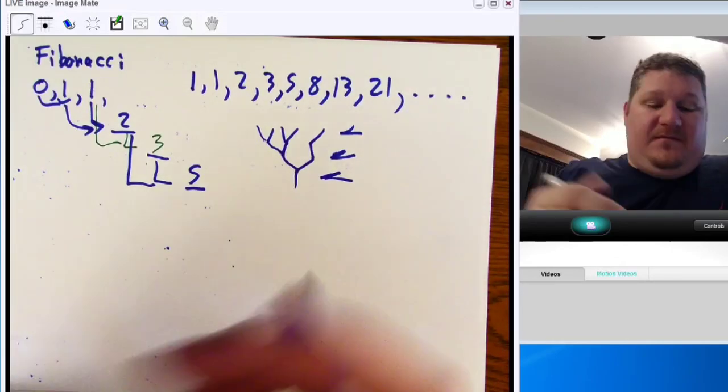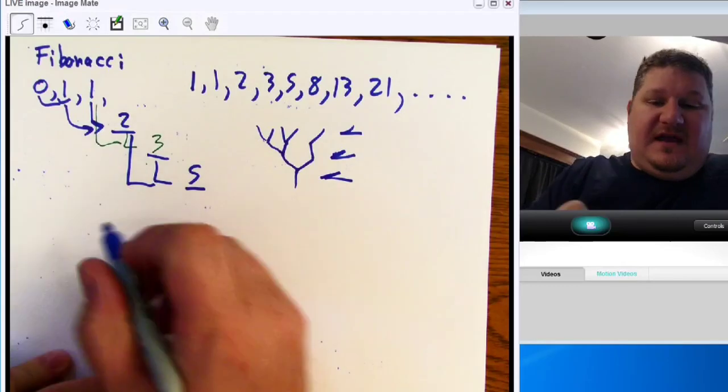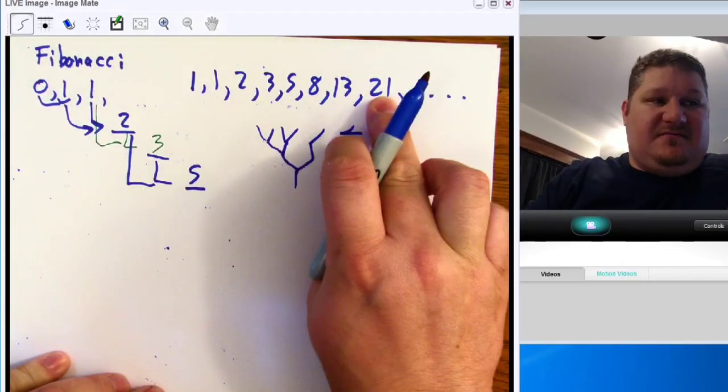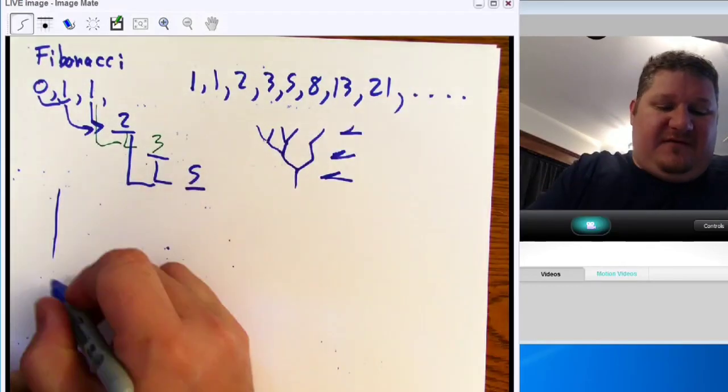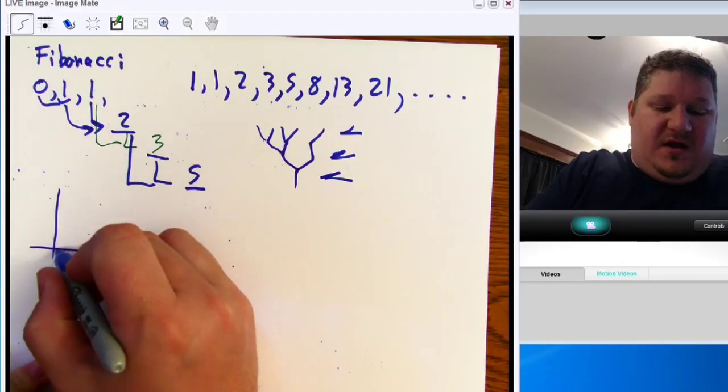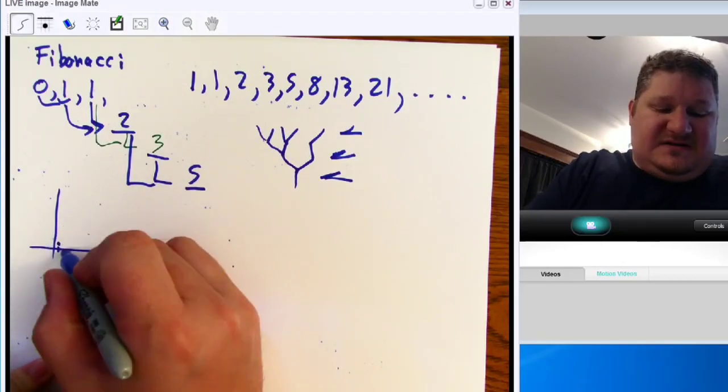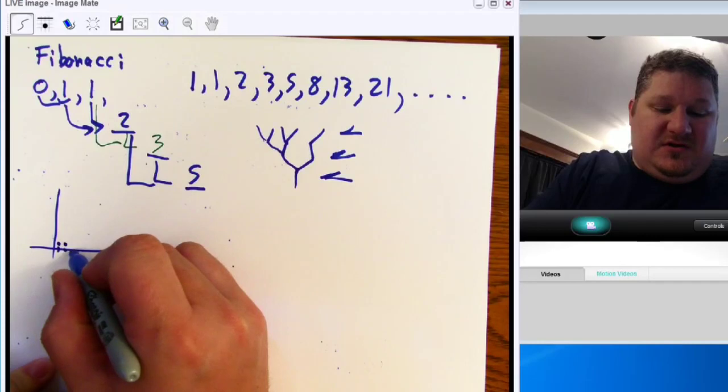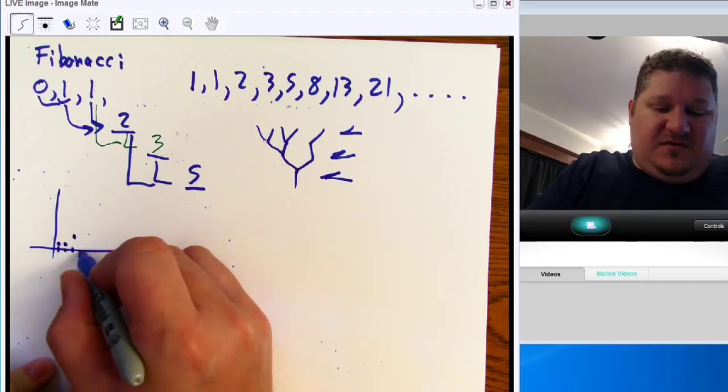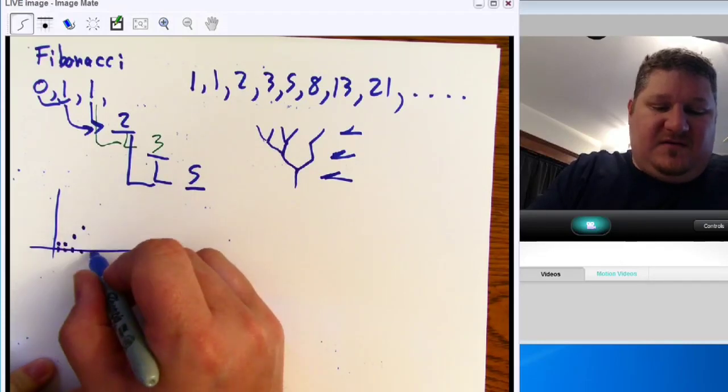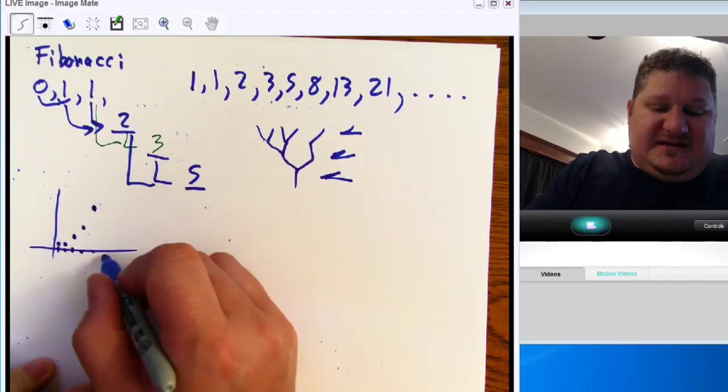If you'll look, if we had a sequence like this, for example, if we were to graph those, in the first term you get 1, in the second term you get 1, in the third term you get 3, in the fourth term you get 5, in the fifth term you get 8, in the sixth term you get 13.